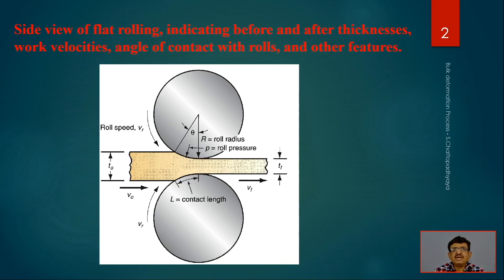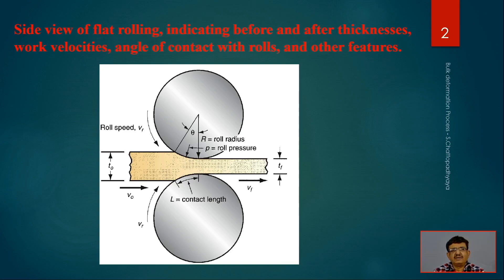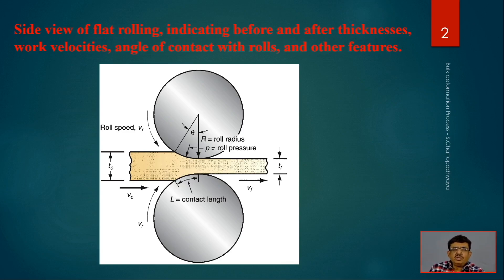The initial thickness is t₀ (t original) and after rolling it will be converted to t_f (final thickness). Before and after thicknesses, work velocities, angle of contact with rolls, and other features are associated with rolling activity.